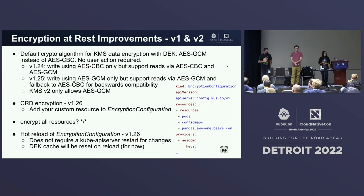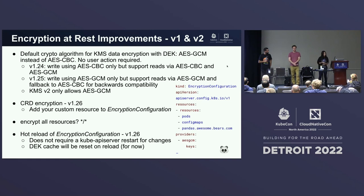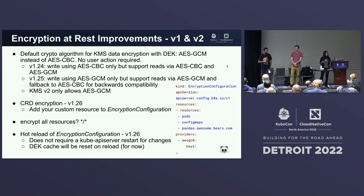We also have hot reload for encryption configuration. For folks who have done this in the past, you know how hard it is to make updates, which require an API server restart that can put your cluster at risk. With hot reload, changes will be watched, and starting in 1.26 we'll have this. The DEK cache for now is only reset on reload.